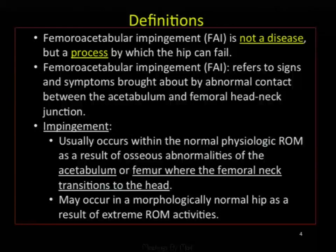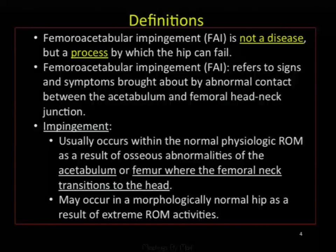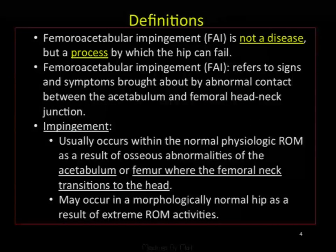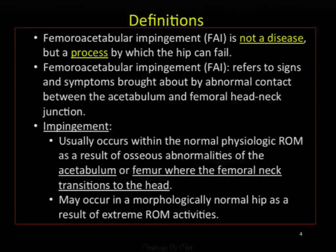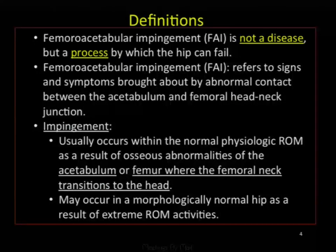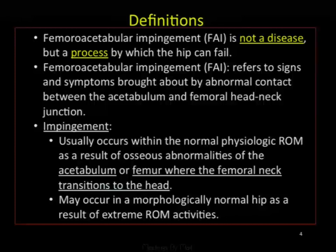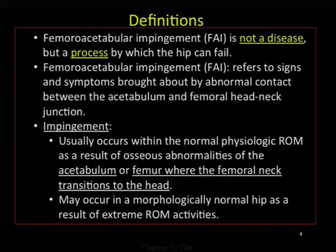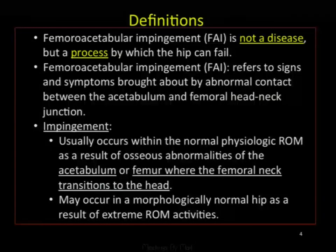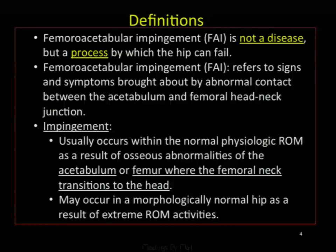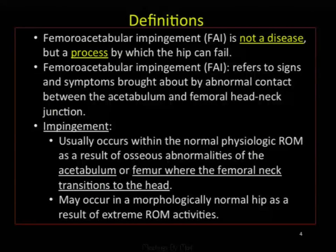Femoral acetabular impingement refers to signs and symptoms brought about by abnormal contact between the acetabulum and the femoral head-neck junction. Impingement usually occurs within normal physiological range of motion—in other words, normal activities—as a result of osseous abnormalities of either the acetabulum or the femur where the femoral head transitions to the neck. It may also occur in a morphologically normal hip with extreme range of motion activities, such as gymnasts.